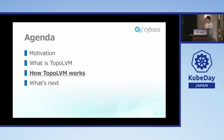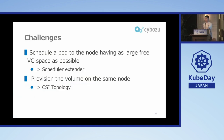Next topic is how TopoLVM works. There are two challenges to implement TopoLVM pod scheduling and volume provisioning. One is scheduling the pod to the node having as large a free VG space as possible — to accomplish this, we use the scheduler extender, an official Kubernetes feature. The second challenge is provisioning the volume on the same node as the pod, for which we use CSI topology, also an official Kubernetes feature. These features are optional, and the CSI driver can implement their own logic using a scheduler extender and CSI topology.